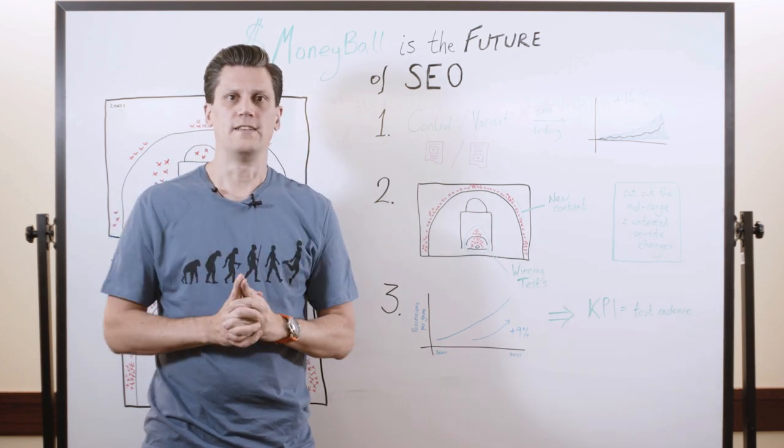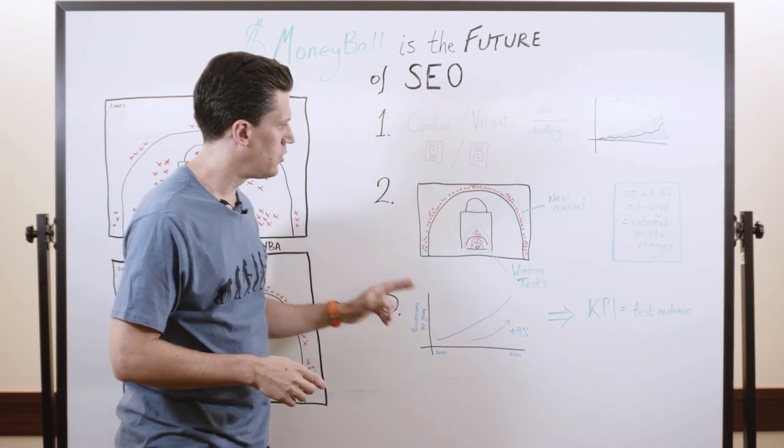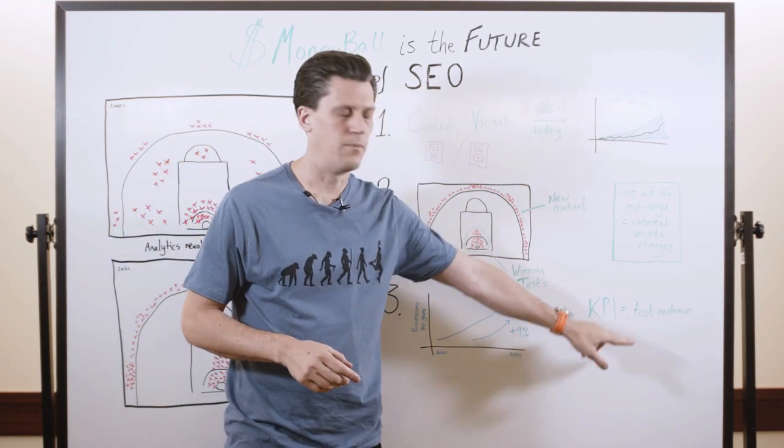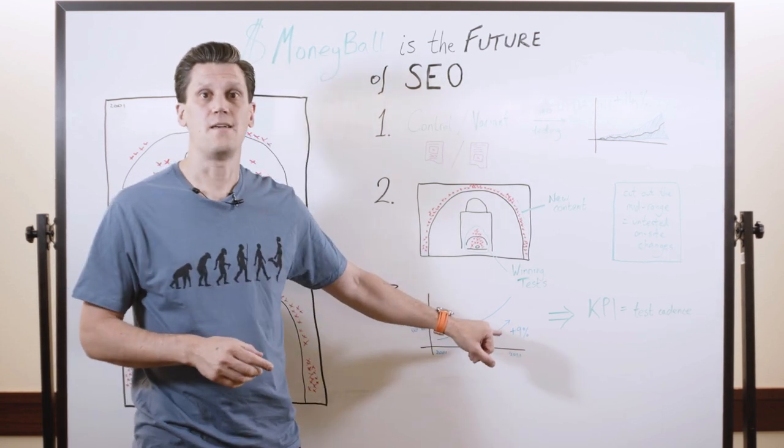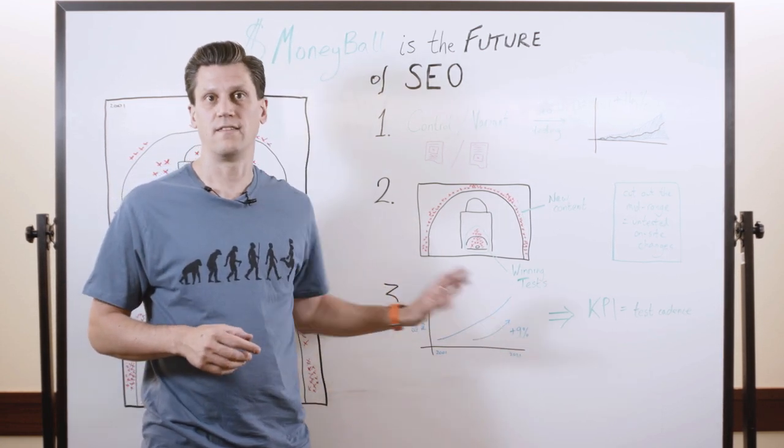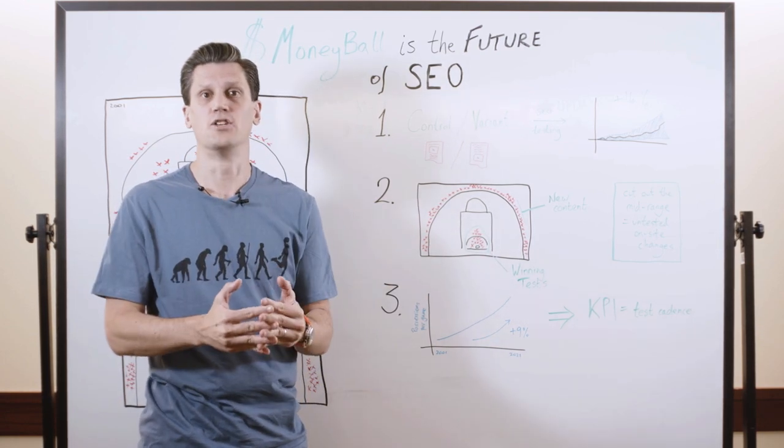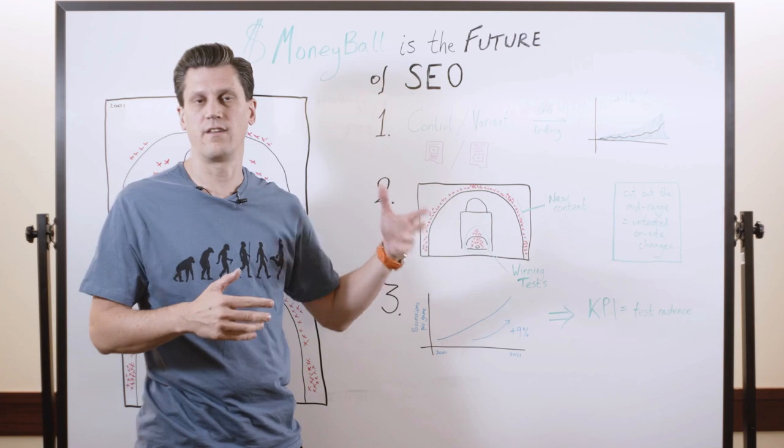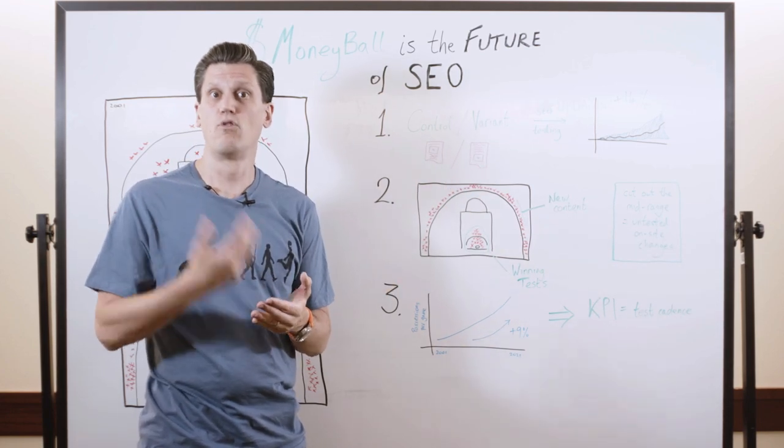And then the final piece of the strategic puzzle here is that you drive your test cadence up. So the basketball equivalent, again, is that over this same time period, possessions per game are up almost 10%. And the reason for that is that if you have an edge, if you have an advantage over your opponents, which is exactly what this kind of advanced insight gives you, you want more goes. You want more repetitions.